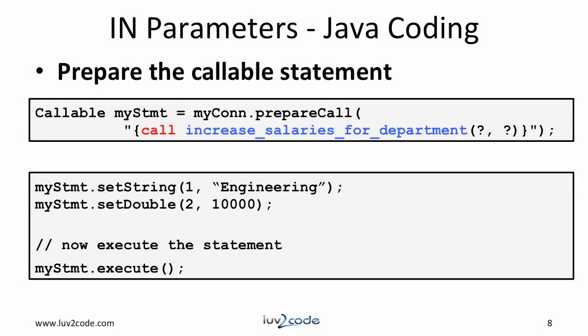In terms of Java coding, we need to make a call to this stored procedure. First we prepare a callable statement. Since this stored procedure takes two parameters, we'll make use of question mark placeholders for the parameters. Then we'll set the parameter values by calling the appropriate setter methods. For this example, we're increasing salaries of employees in the engineering department by $10,000. Once the parameter values are set, we call the execute method on the statement and that's it.